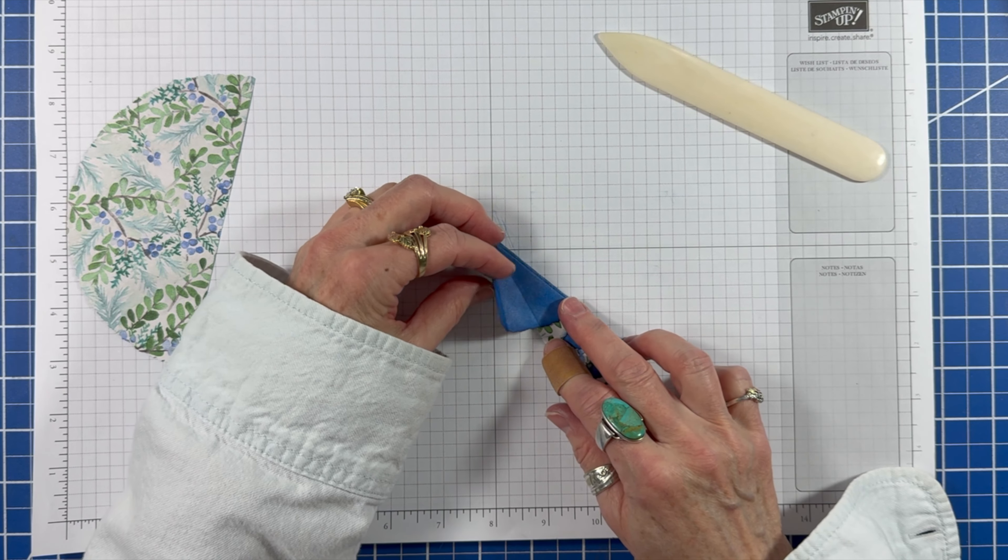For my background layer I took a piece of basic white cardstock and used a blending brush with balmy blue ink to add a little bit of color, representing the sky. Then I embossed the piece with a snowflake sky 3D embossing folder. Some liquid glue on the back and I adhered it to a blueberry bushel card base.